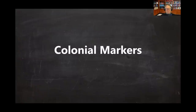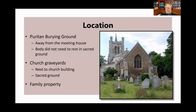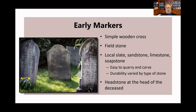Let's begin with the colonial markers and first talk about location. Grave markers are found in cemeteries, although early burying grounds weren't called cemeteries. Puritans in New England usually buried their dead in a dedicated ground typically located away from the meeting house, as the body did not need to rest in sacred ground. For non-Puritans, a typical location was a church graveyard adjacent to the church building — usually consecrated and considered sacred. And of course, the final type of resting place was family property; many early settlers were buried on their farms.